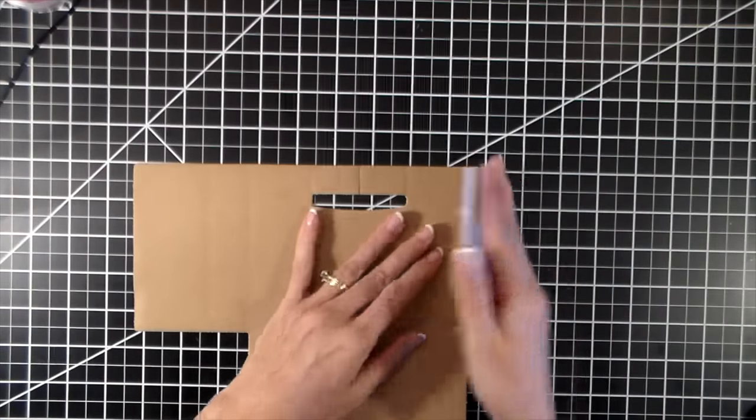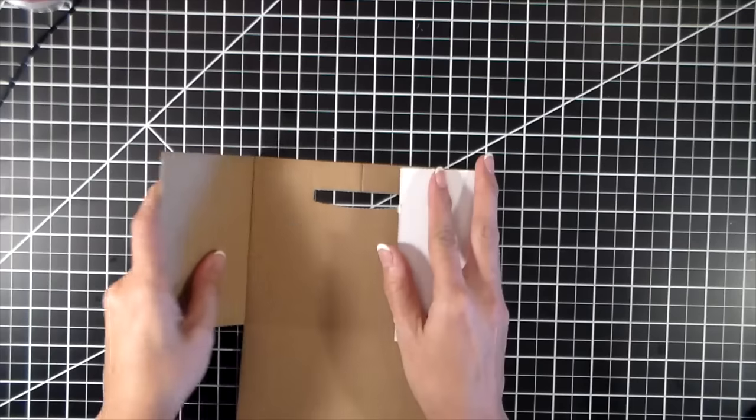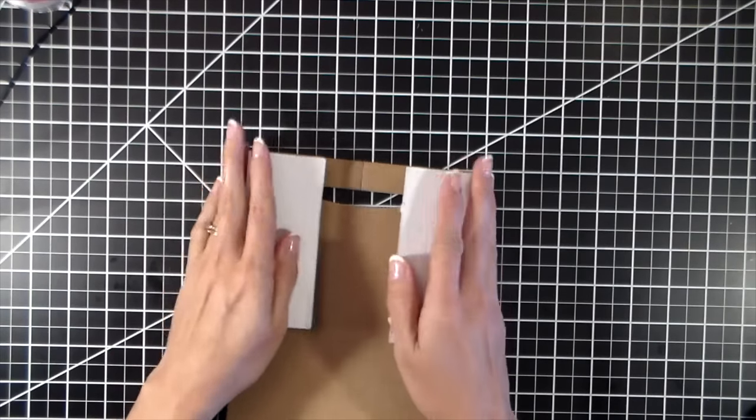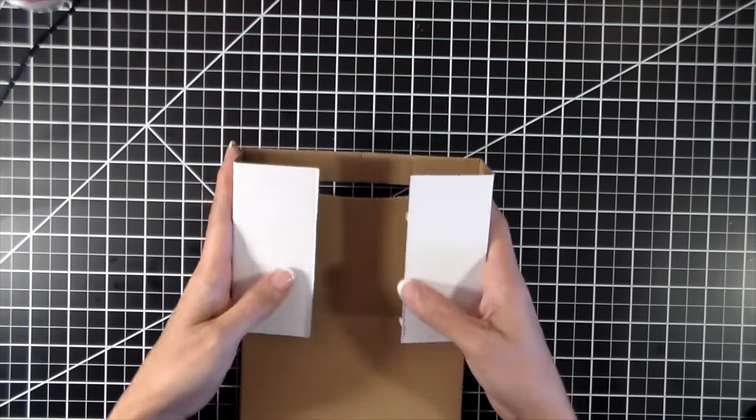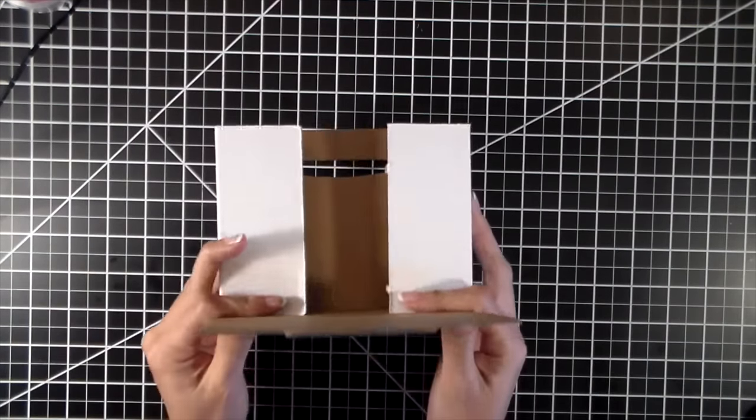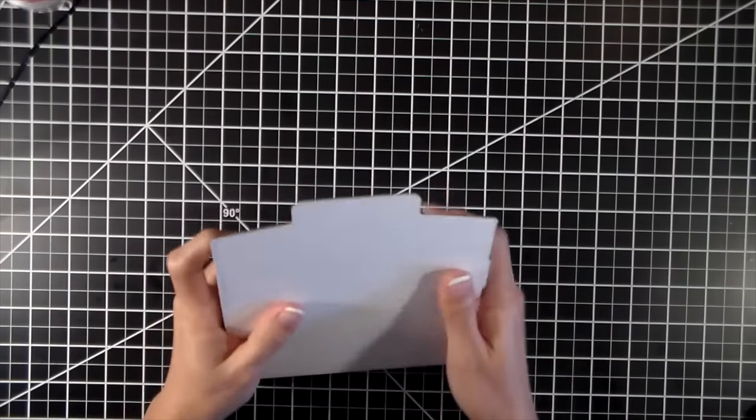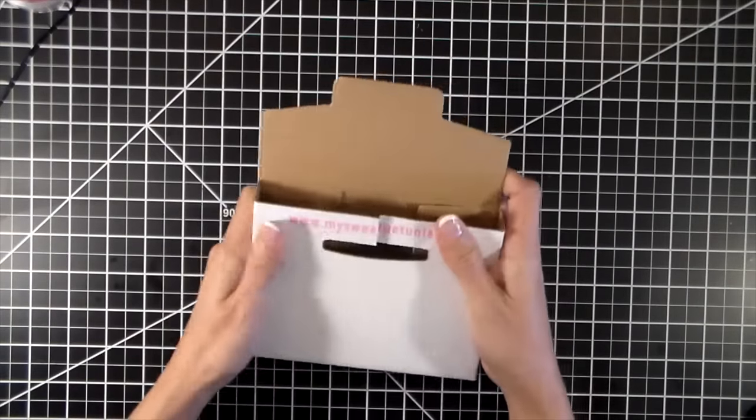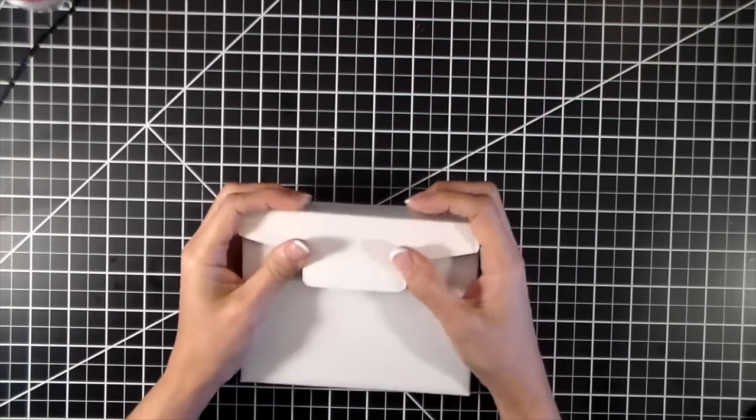Everything's already scored, so you're just going to fold it like this. You don't even have to add adhesive to the sides because they'll stay in place. Then you're just going to fold it like that and tuck it in.